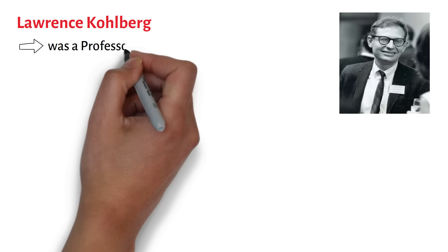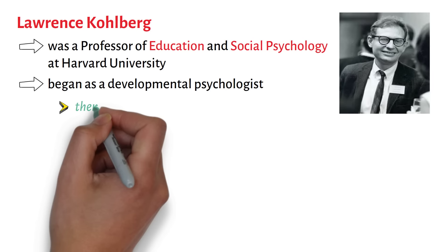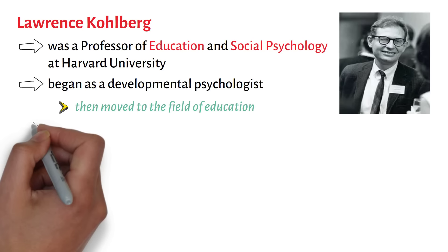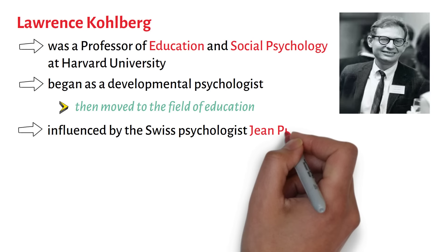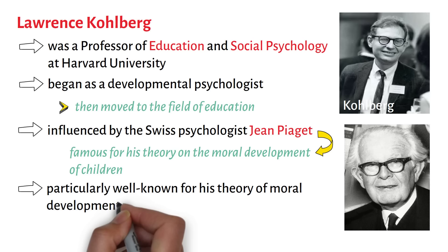Lawrence Kohlberg was a professor of education and social psychology at Harvard University. He began as a developmental psychologist and then moved to the field of education. He was influenced by the Swiss psychologist Jean Piaget, who was famous for his theory on the moral development of children. Kohlberg was particularly well known for his theory of moral development, which he developed through his extensive research at Harvard's Center for Moral Education.